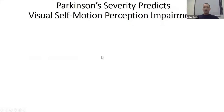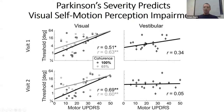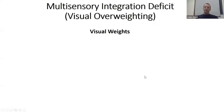We then studied multi-sensory integration and also found that the disease correlates with the visual impairments. The more a person is along in the disease — measured by the UPDRS — the higher their visual thresholds, the worse they are. Whereas for vestibular there's no correlation, just as we found no impairments.